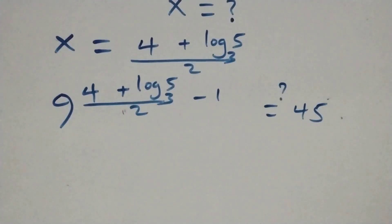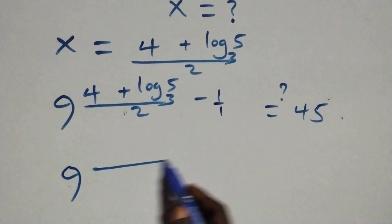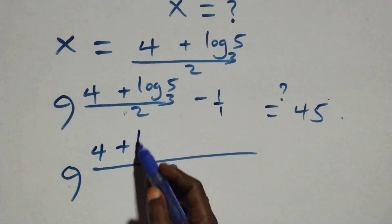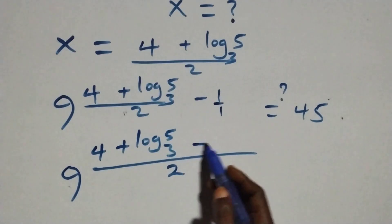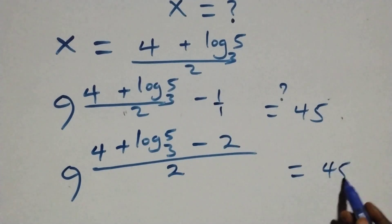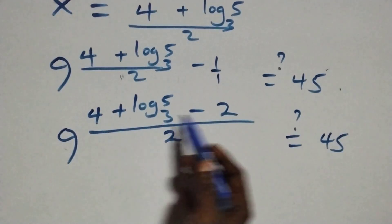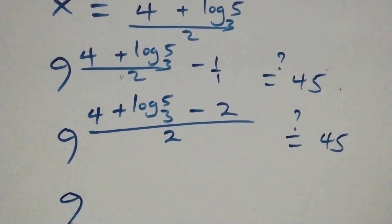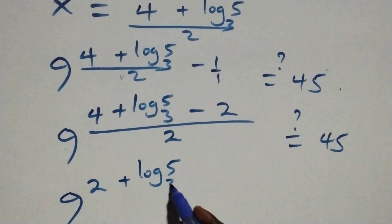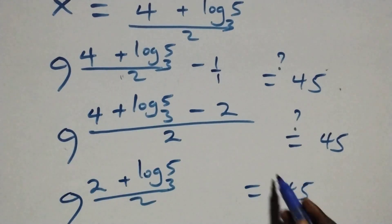We bring this power together as one. We have 9 raised to power (4 plus log 5 base 3 minus 2) all over 2. Then 4 minus 2 gives 2, so we have 9 raised to power (2 plus log 5 base 3) all over 2, equals 45.